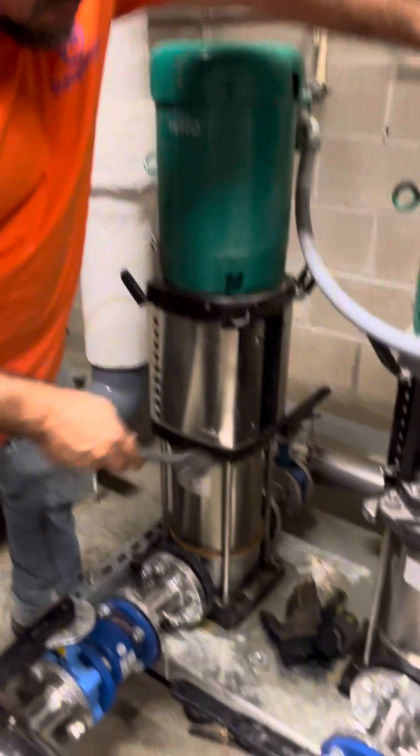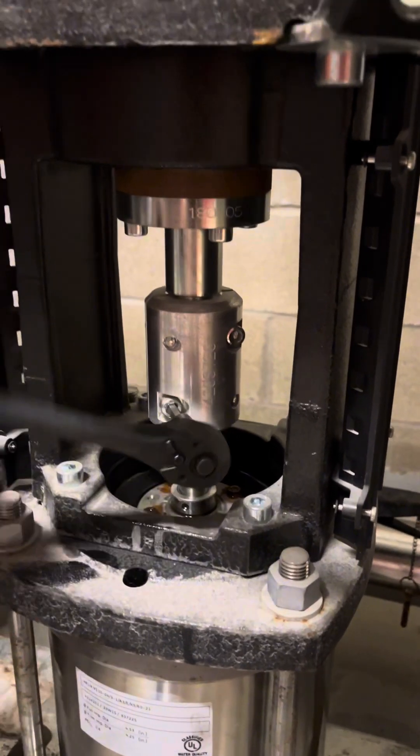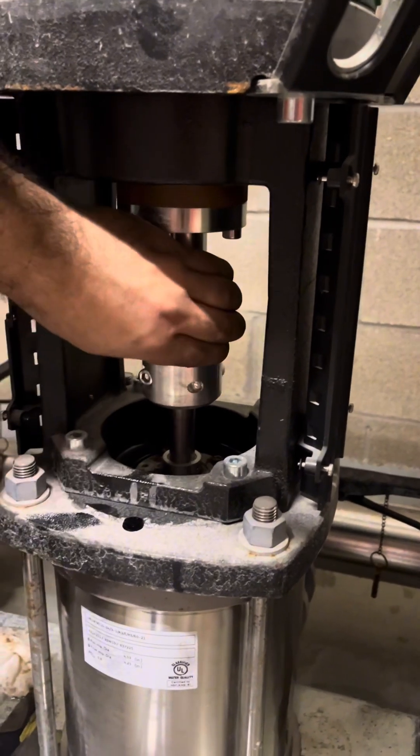Size six Allen wrench here, and we're going to start by loosening the coupling. This is the way the motor shaft and the pump shaft are separated from each other.